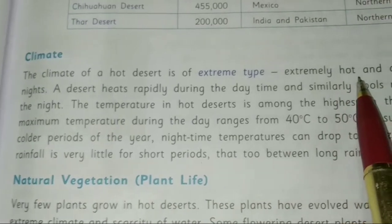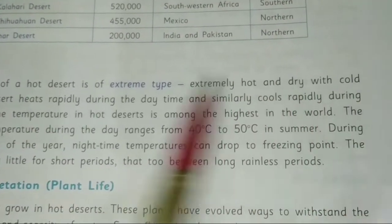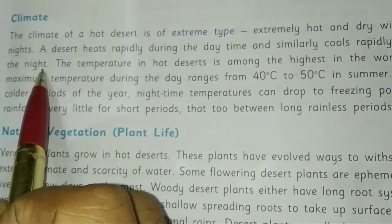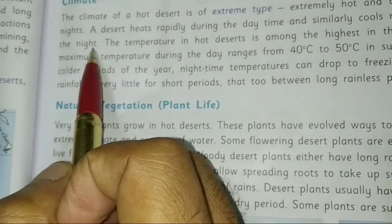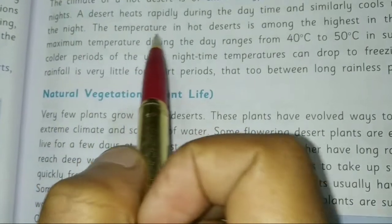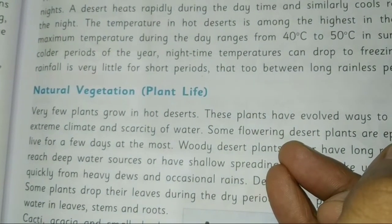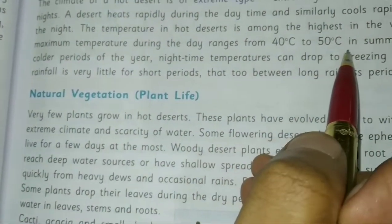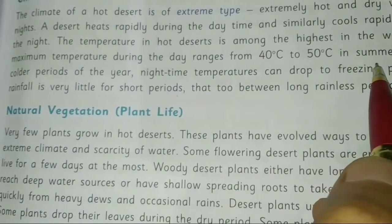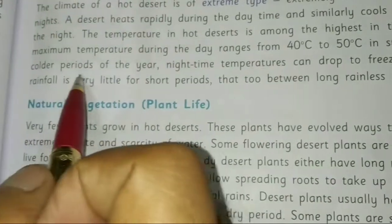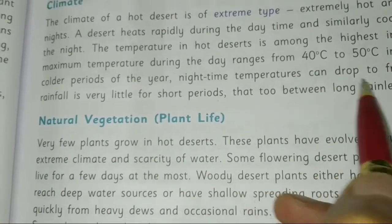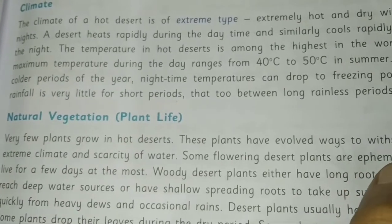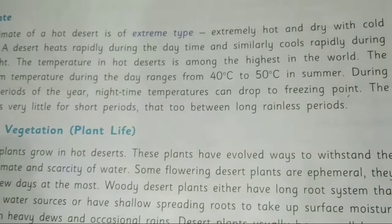The climate of hot deserts is extreme — extremely hot and dry with cold nights. The desert heats rapidly during the daytime and similarly cools rapidly during the night. The maximum temperature during the day is 40 to 50 degrees Celsius, among the highest in the world.